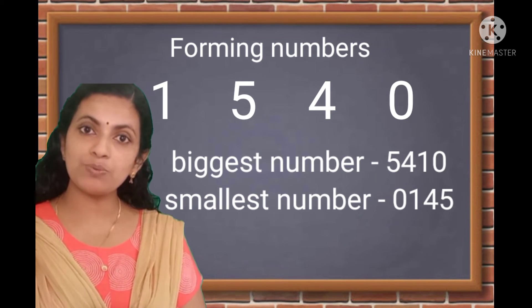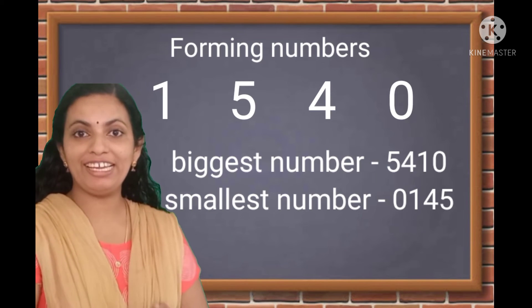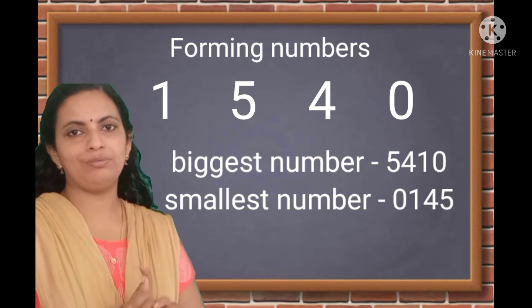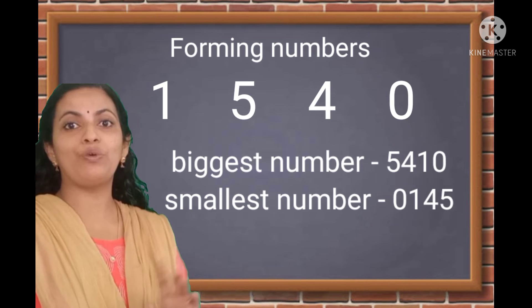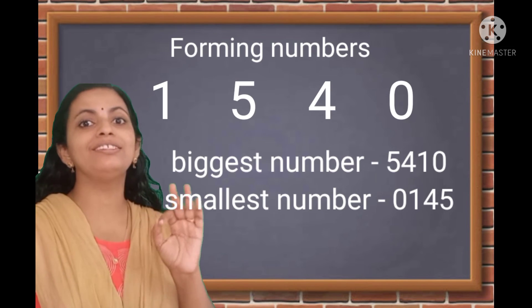What about the smallest number? We are arranging these numbers in ascending order. We will get 0145. But can you read it? 145. 145 is a three digit number, isn't it?